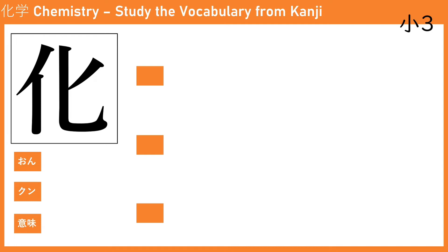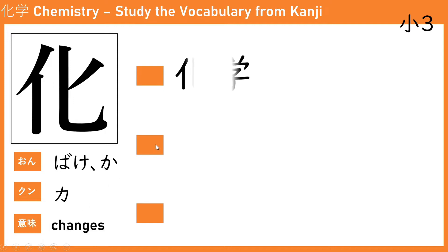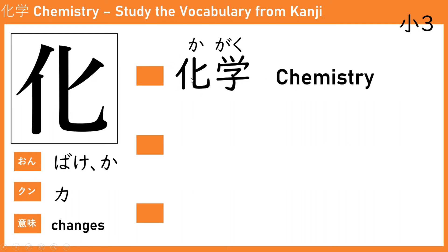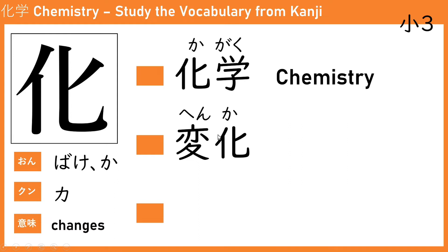The first kanji is 化 (ka). The kunyomi is ka and onyomi is bake or ka. The meaning is changes. The first word is 化学 (ka-ga-ku), which means chemistry. 化 means changes, 学 means study, so the study of changes is chemistry.